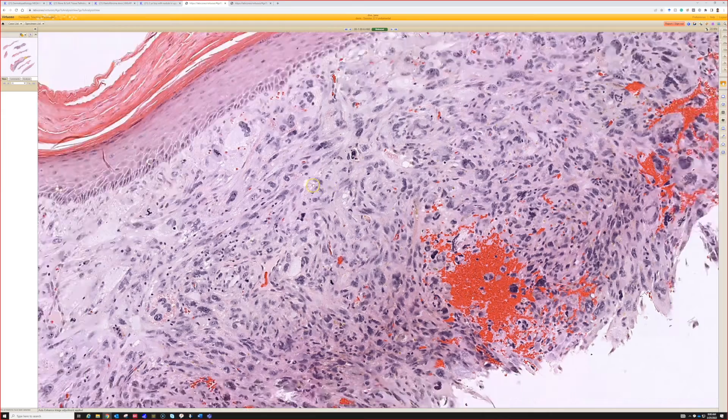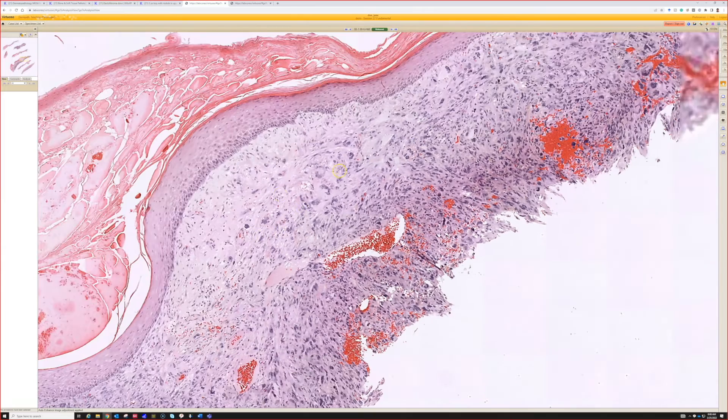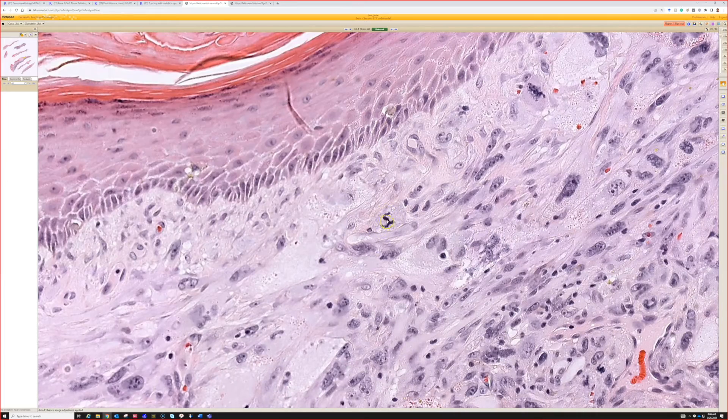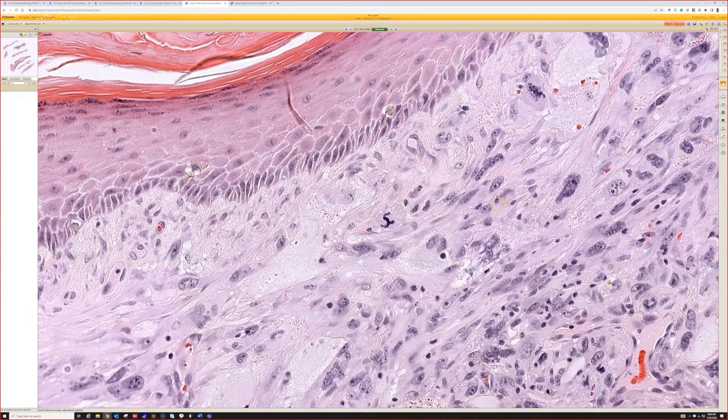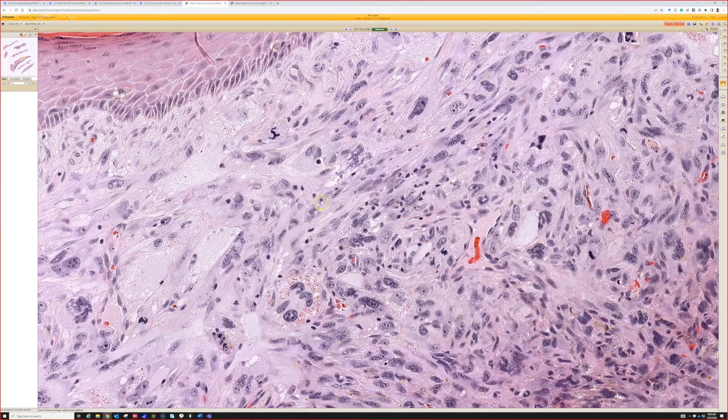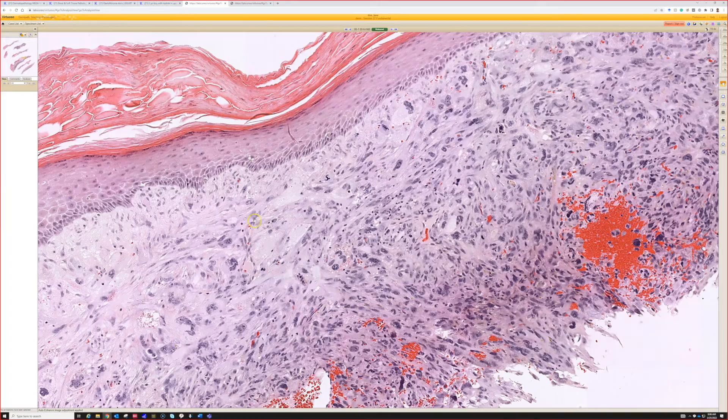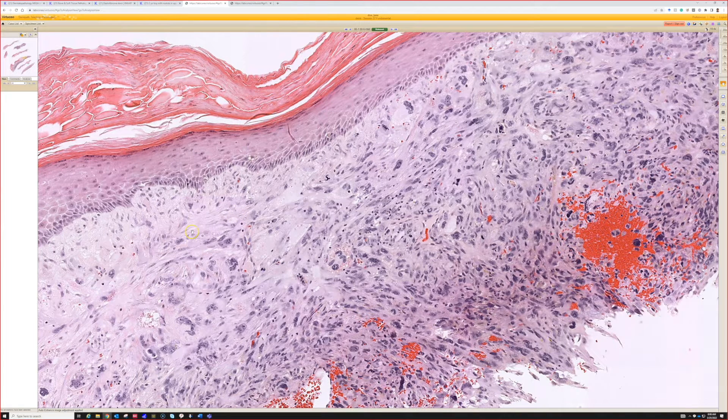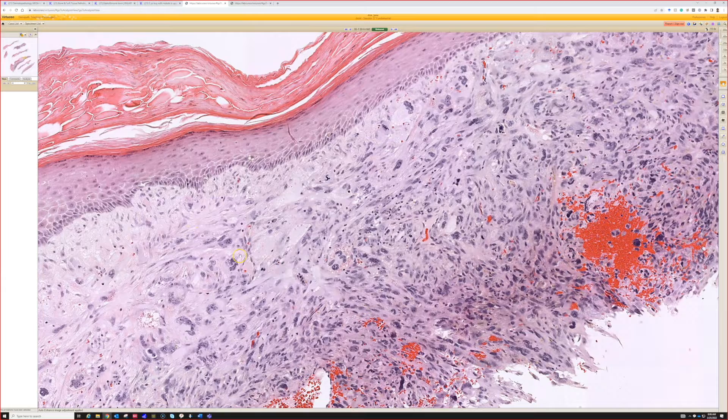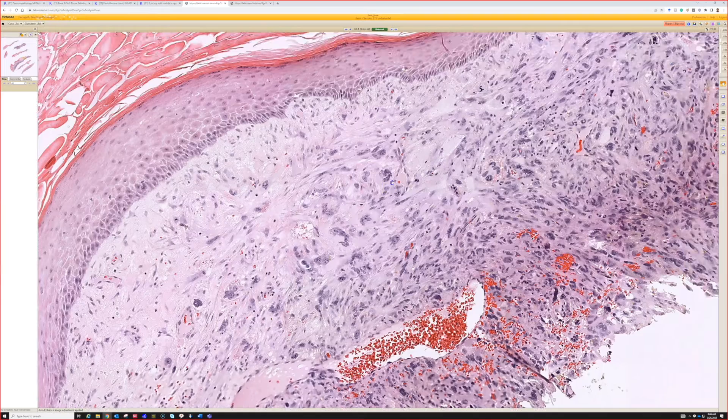Very good. Yes. So the slam differential, very nicely explained, Raheel. Oh, look at how atypical that mitosis is. Whoa. It's like a lambda or something. So the typical situation here is this is an erythematous ulcerated, sometimes crusted, not always, but sometimes erythematous papule or nodule usually on the head and neck of an elderly sun damaged person.